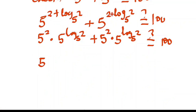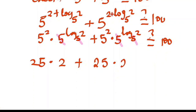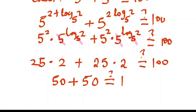So 5 to the power of 2 gives us 25, multiplied by 5 to the power of log base 5 of 2. Since 5 to the log base 5 of 2 equals 2, we cancel those, leaving us with 25 times 2, which is 50. The same applies to the second term: 25 times 2 equals 50. So 50 plus 50 gives us 100.